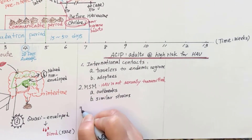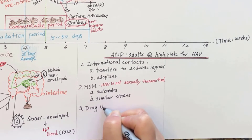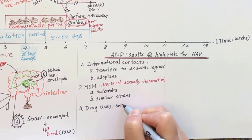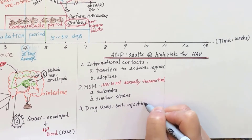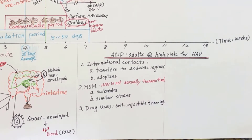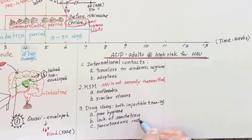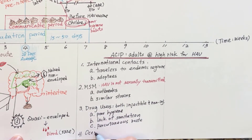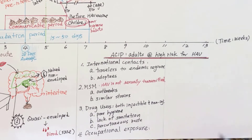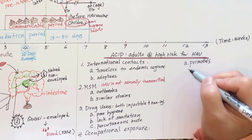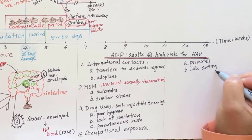There are also outbreaks reported among drug users, regardless of whether injectable or non-injectable drugs are used. Poor hygiene, lack of sanitation, and percutaneous transmission are the risk factors associated with drug users contracting hepatitis A. Occupational exposure places people working with primates or in laboratory settings at risk for hepatitis A infection.